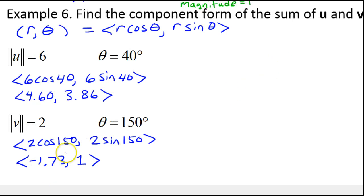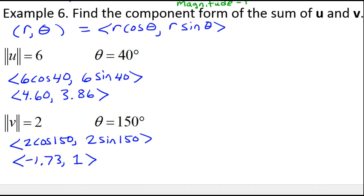Okay, so we're supposed to find the sum of u and v. So what we need to do now is find u + v, and all we need to do is add the corresponding components. So 4.60 + (-1.73)...